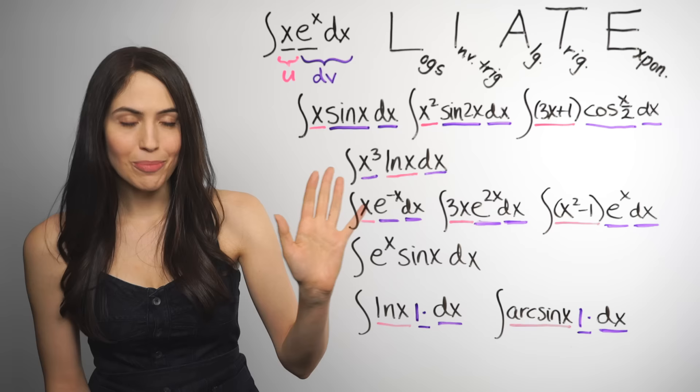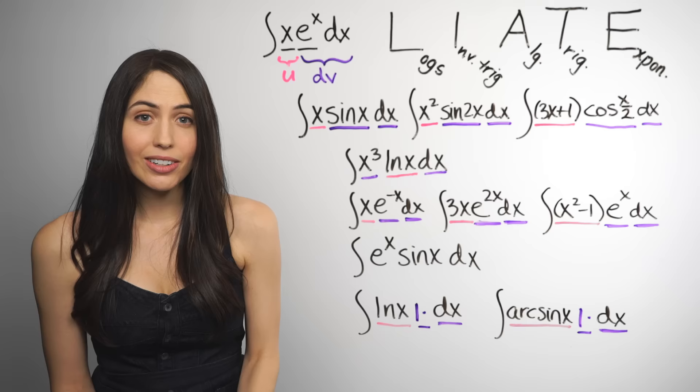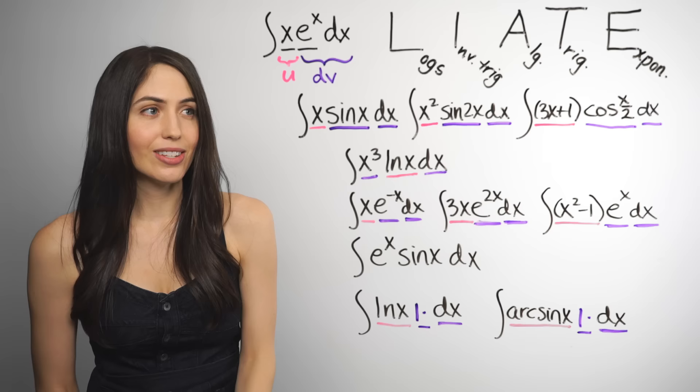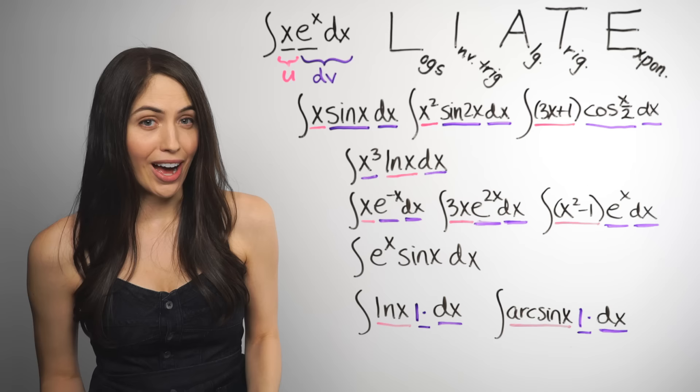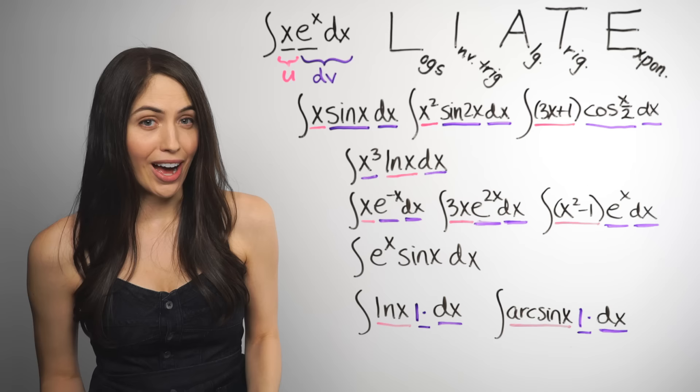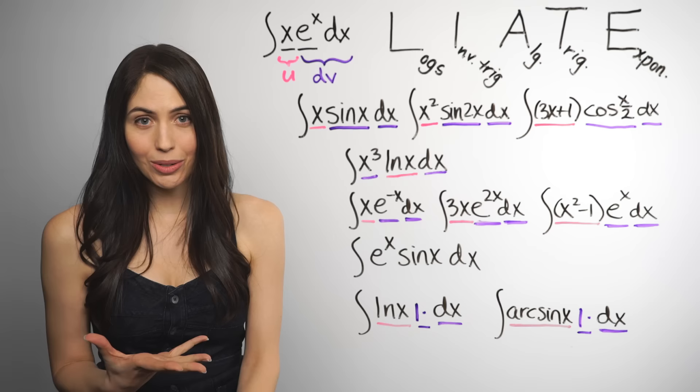So that's integration by parts. Just a couple things. If you ever see a definite integral with upper and lower limits where you need to use integration by parts, you can do it. It's just a little more work of evaluating the limits for each term. So in the formula, the uv term you'll evaluate limits for. The integral v du will have limits on it. If you ever want to derive the integration by parts formula, you can do that. You take the product rule and you integrate it, and it's not that bad. That's a whole other video though.